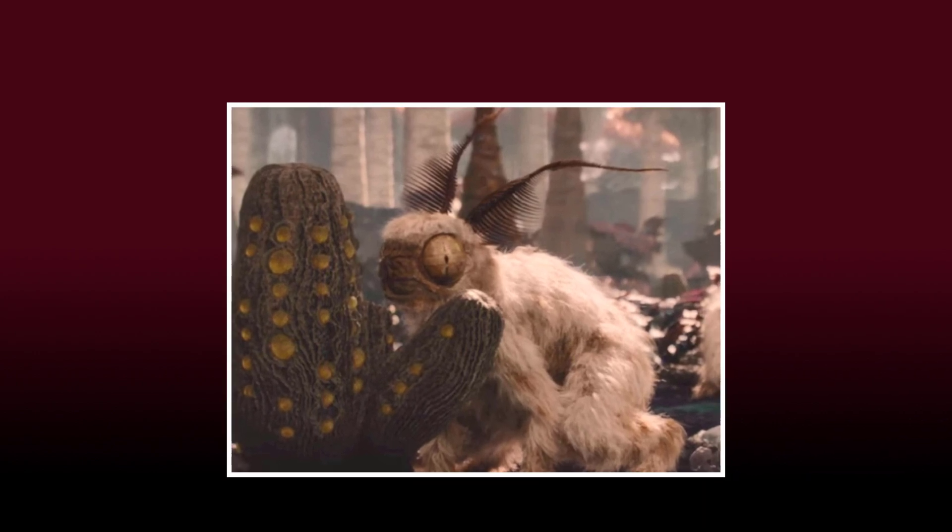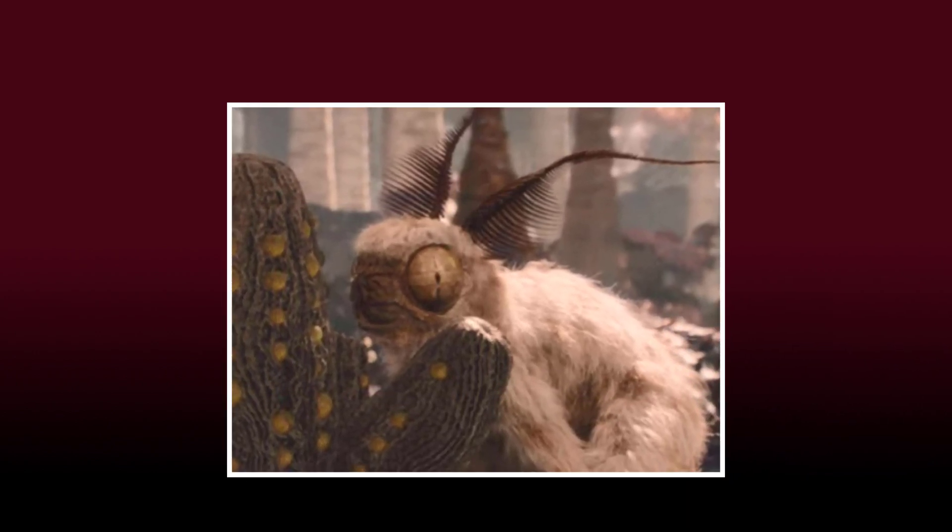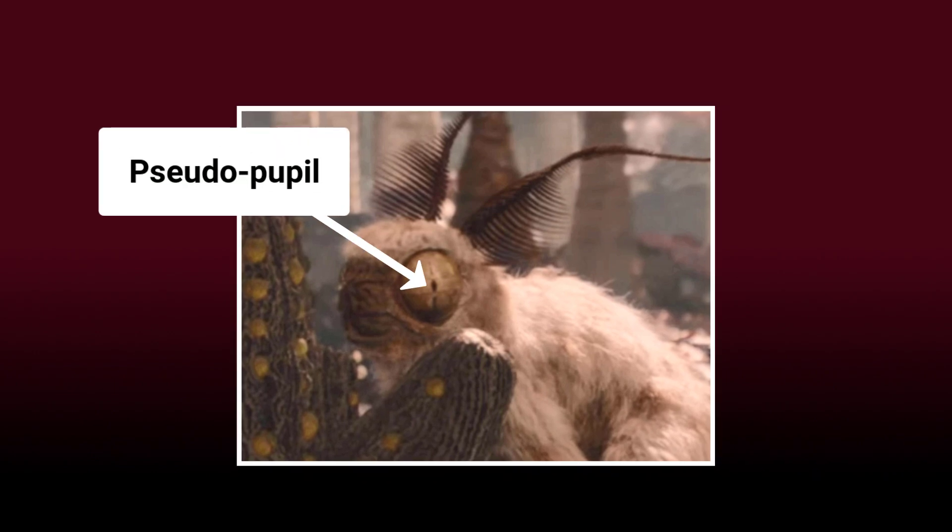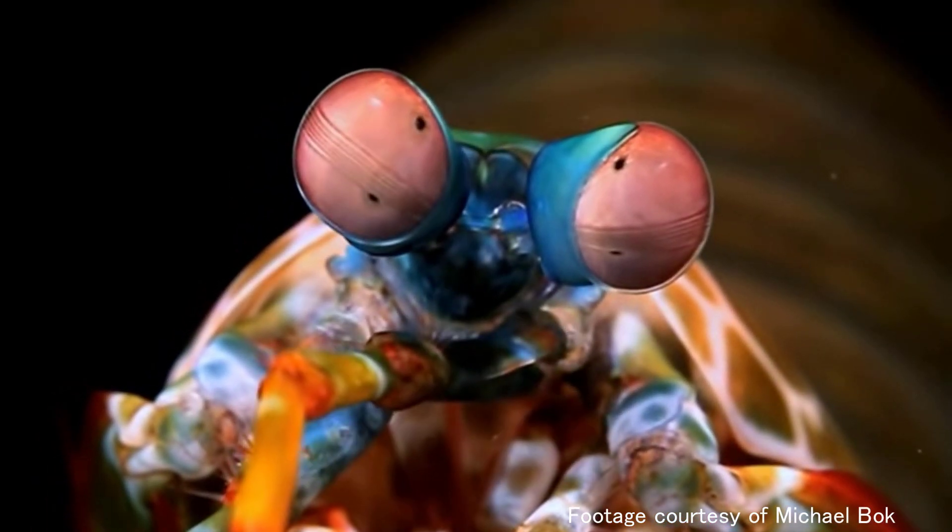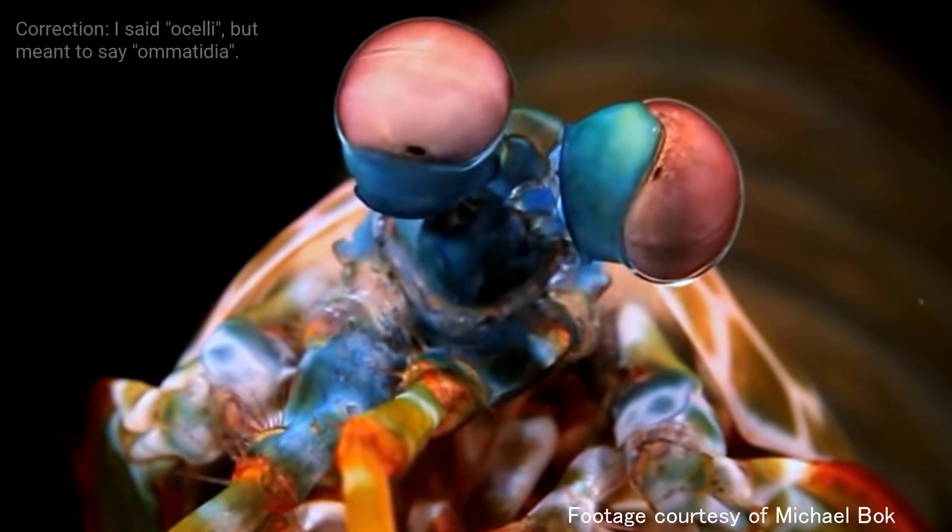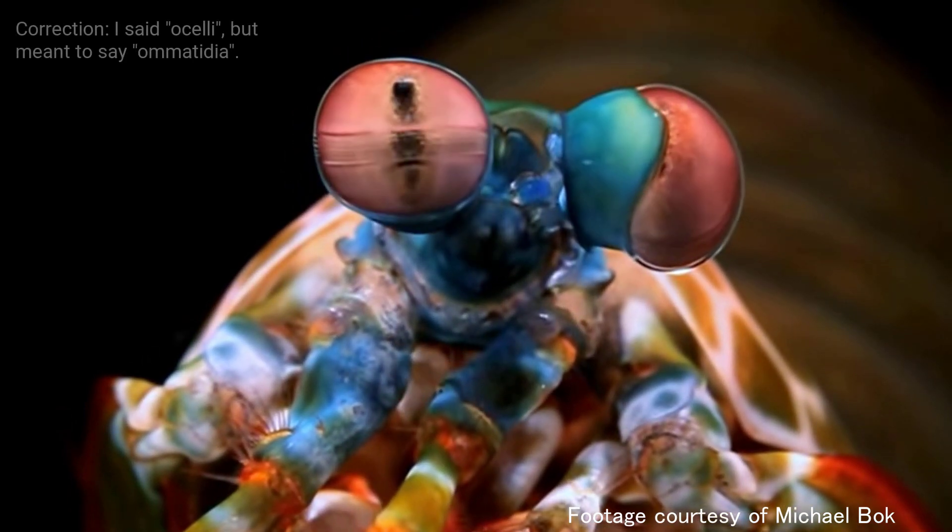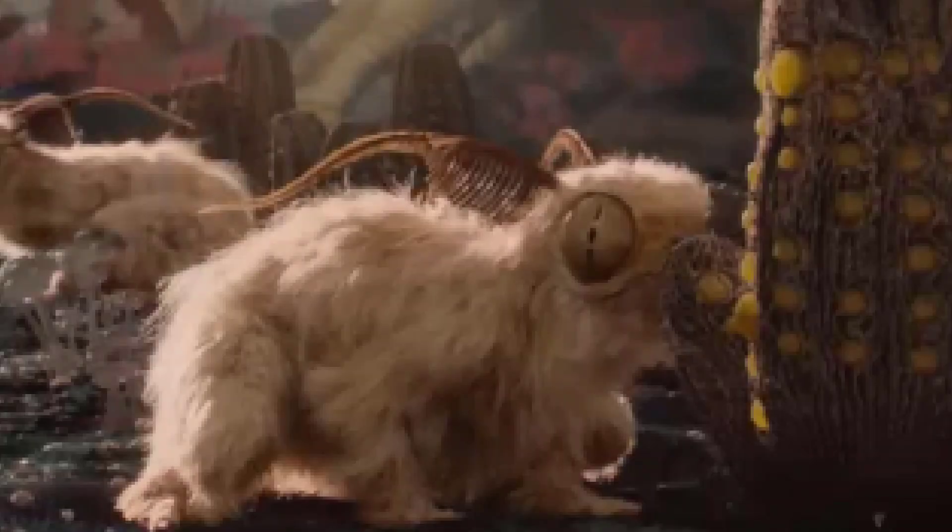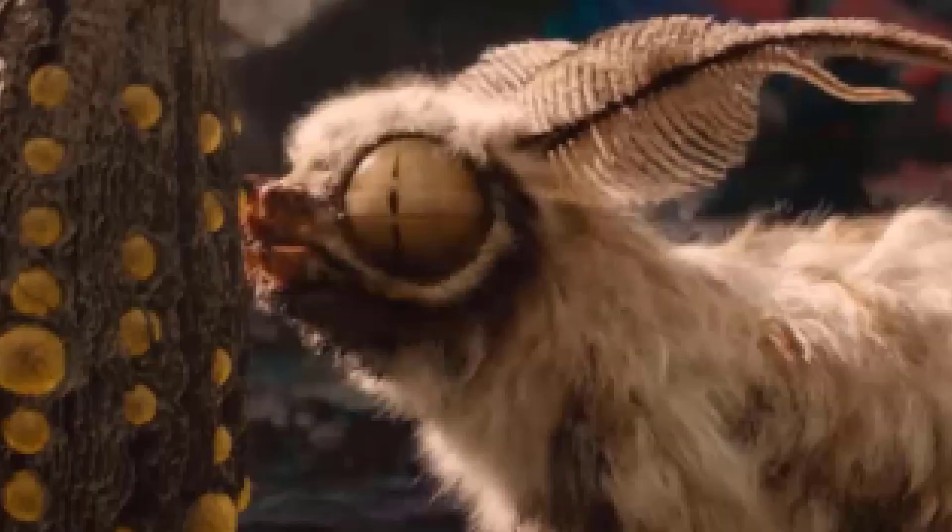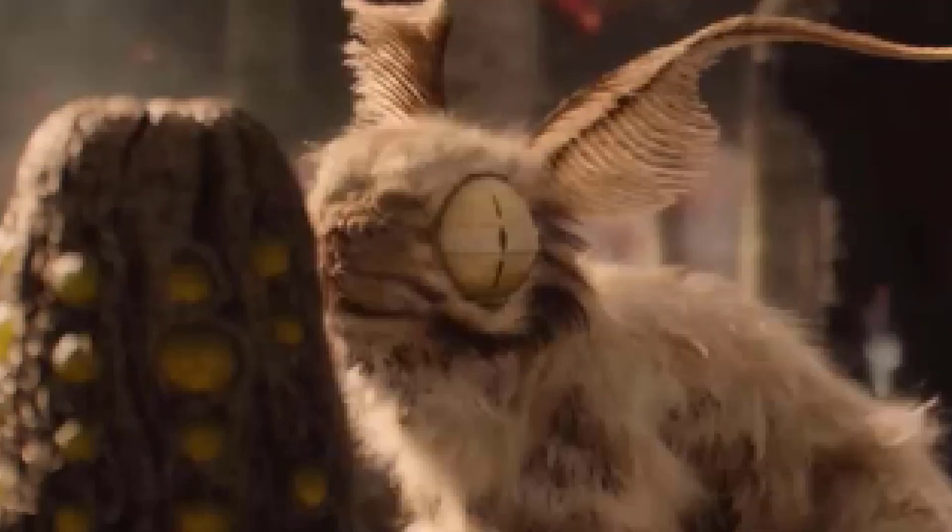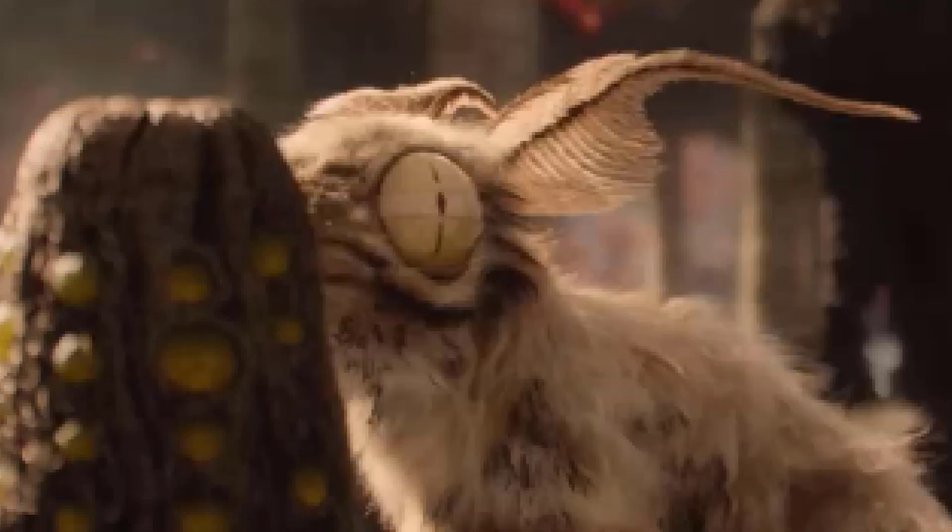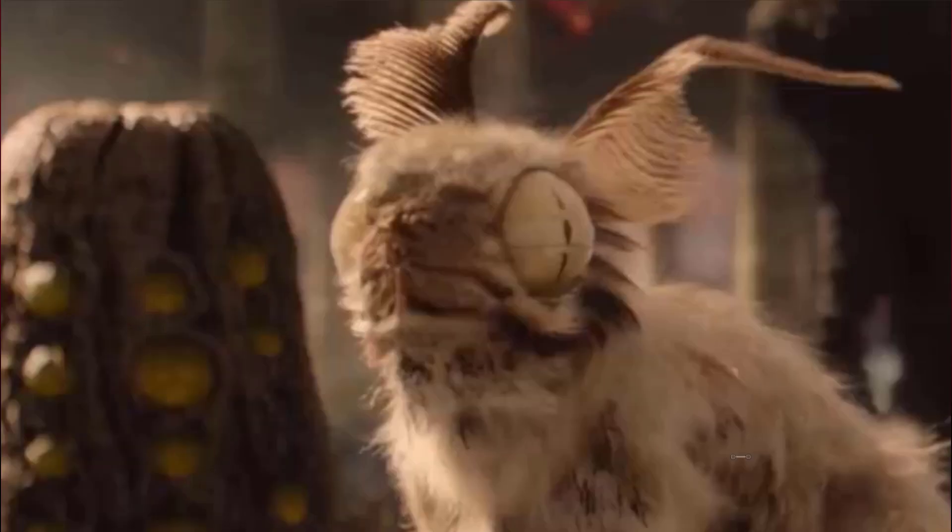But assuming these are compound eyes, they get one important detail wrong. The pseudopupils. Compound eyes may appear to have a pupil, but this is merely an optical illusion, because the dark spot is just those ocelli that you look straight into, rather than their colorful, opaque sheaths. The mistake here is that the apparent pseudopupil of the grazers are not animated to constantly change position, depending on the viewer's perspective, but remain fixed. In reality, looking at the grazer from the front, instead of this, you'd rather see this.